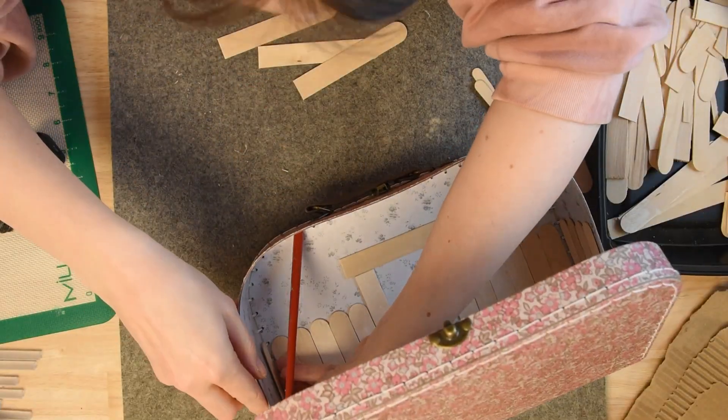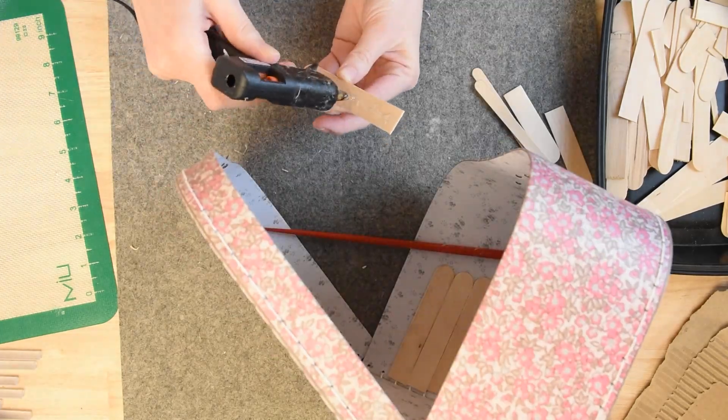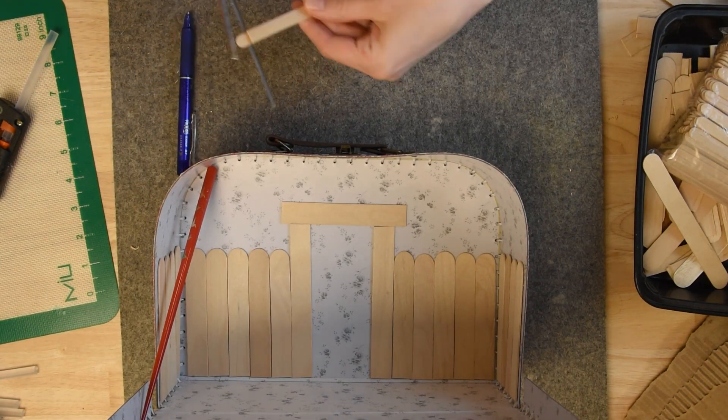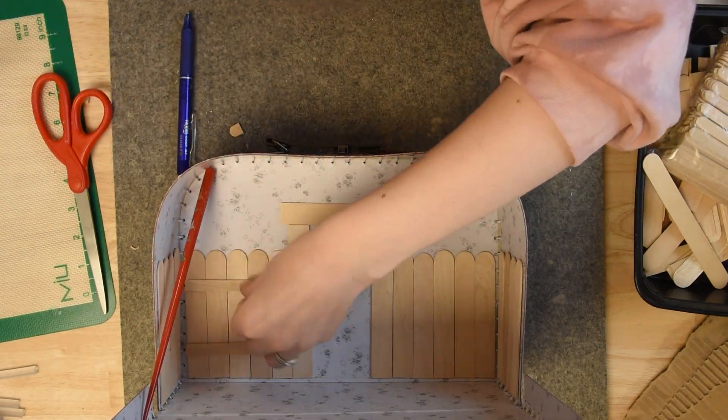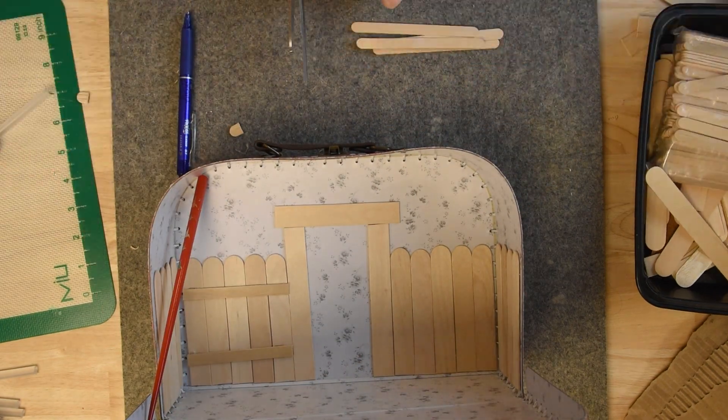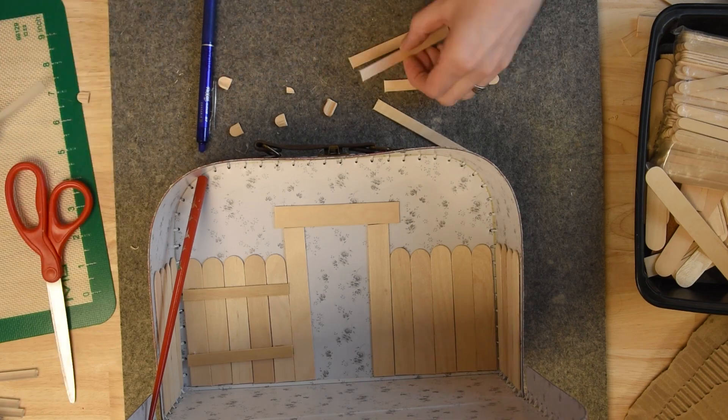Here I'm just gluing these onto the side. Nothing too fancy. I did find that I liked using this hot glue the best for gluing wood onto this paper. When I did my elf house, it was a wood base that I glued popsicle sticks onto, and for that I used wood glue.